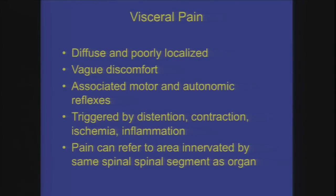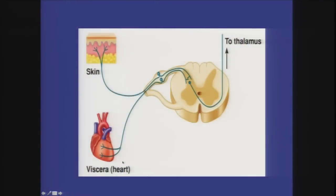All of these things make visceral pain a very difficult condition to treat. On top of that, pain can refer to the same spinal segment as the organ. Say you have pain being triggered in your heart, like in a heart attack, and those signals come back into your spinal cord. They're converging on somatic neurons coming from a similar level of skin, so you get referred pain. Even if your pain is primarily related to a pelvic organ, it may spread and be referred to areas on the skin, making it more difficult to localize or describe.